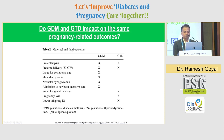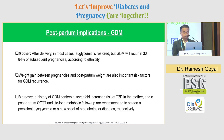Do GDM and GTD impact the same pregnancy-related outcomes? Yes. Both GDM and GTD share preeclampsia risk and preterm delivery risk. Risks specific to gestational thyroid disease include small for gestational age, pregnancy loss, and lower offspring IQ.